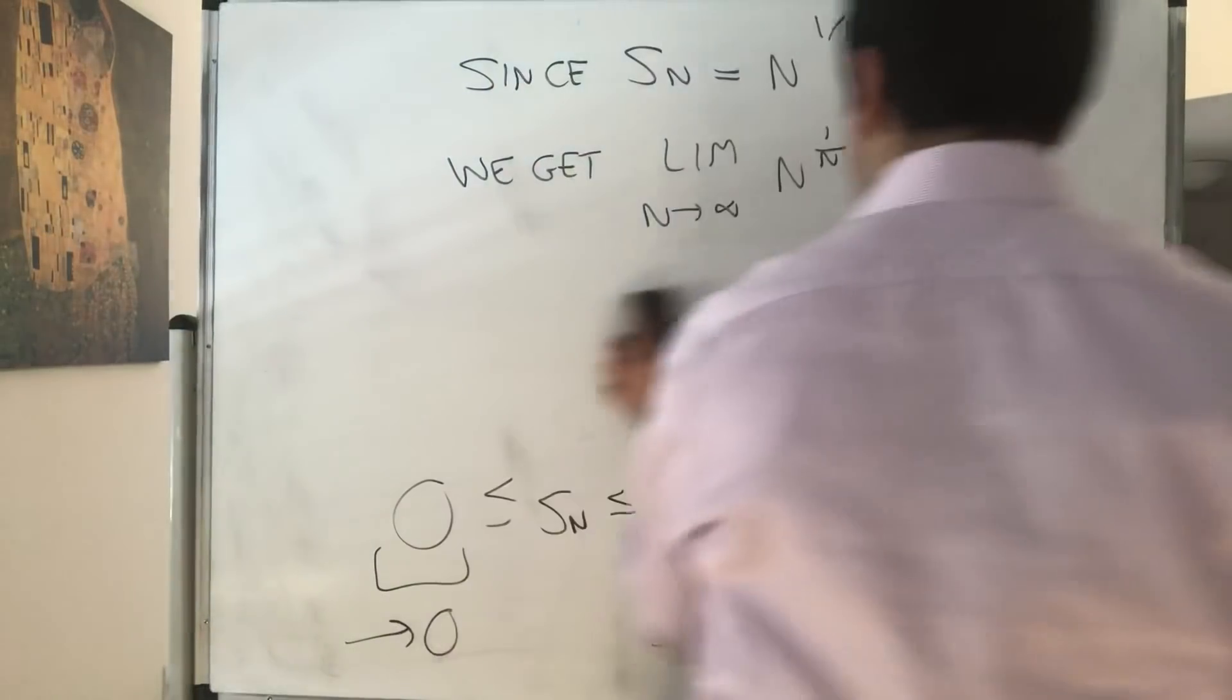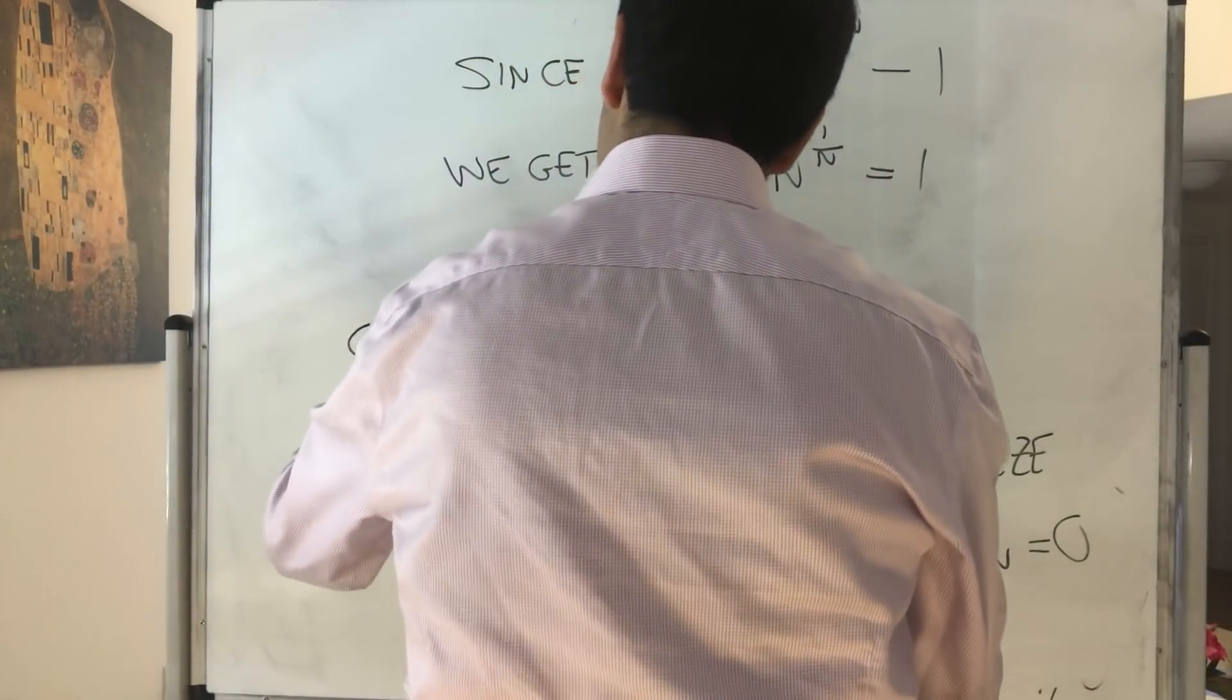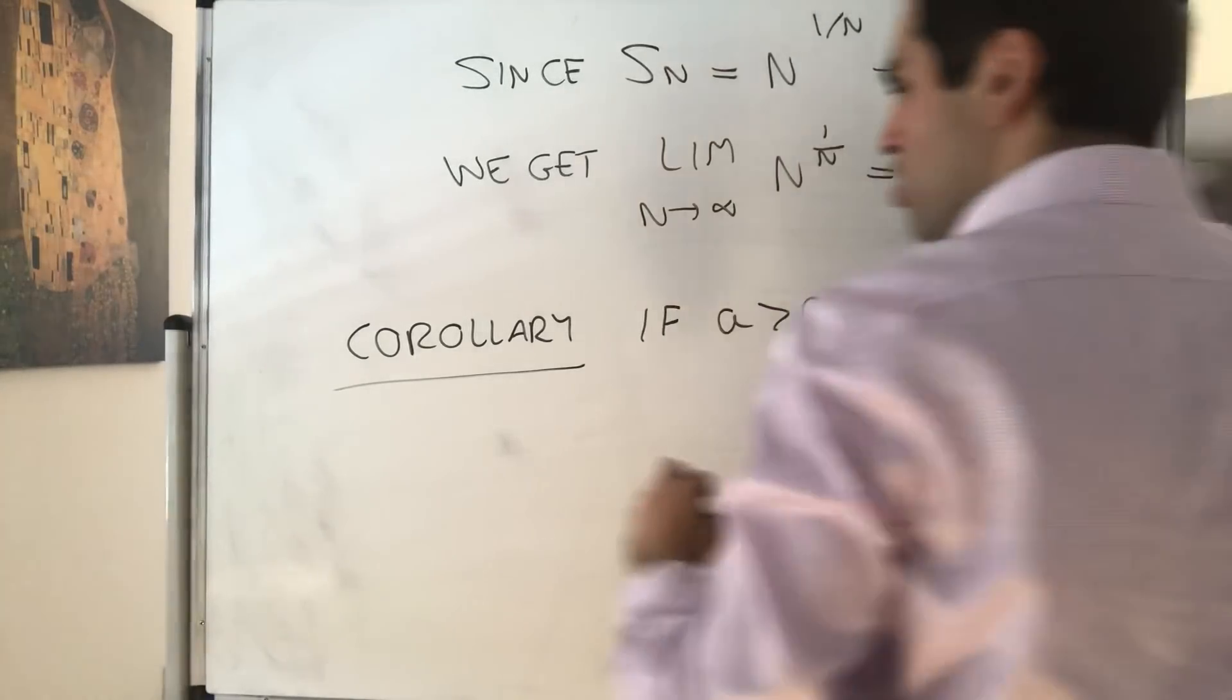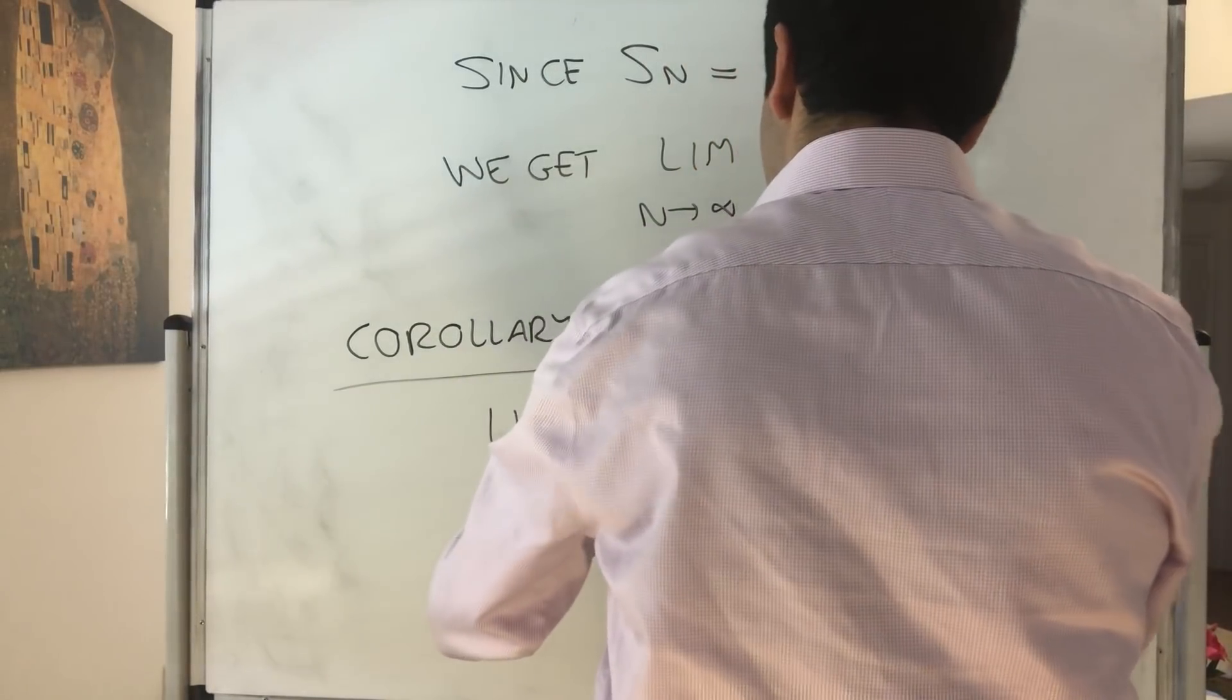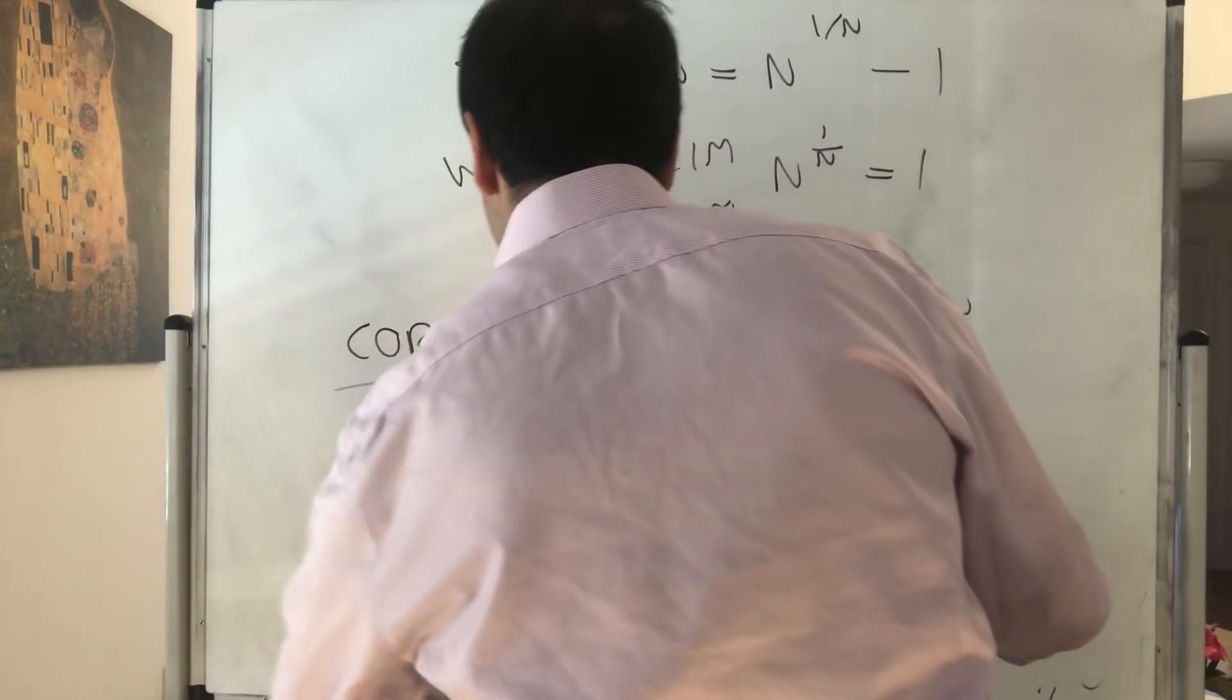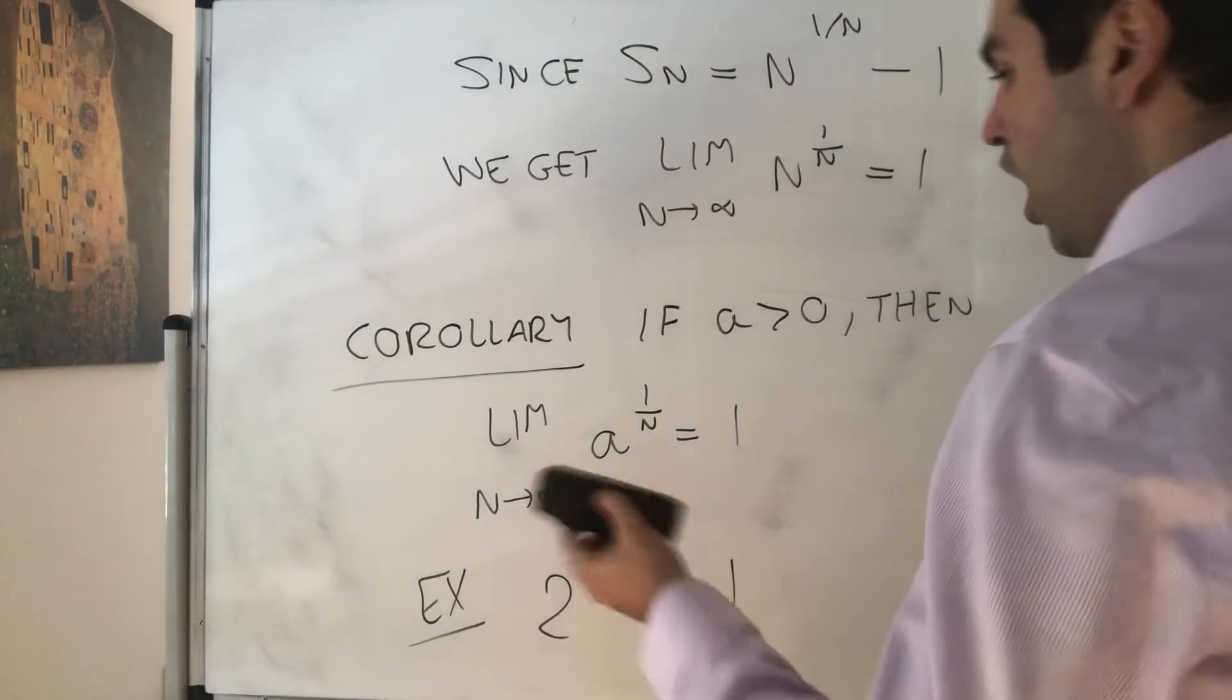Namely, there's a corollary as well, actually even more important than this one. So if a is positive, then not n to the 1 over n, but really a to the 1 over n equals 1. For instance, it will be using this argument. It's true that 2 to the 1 over n goes to 1 as n goes to infinity. And how do we show this?